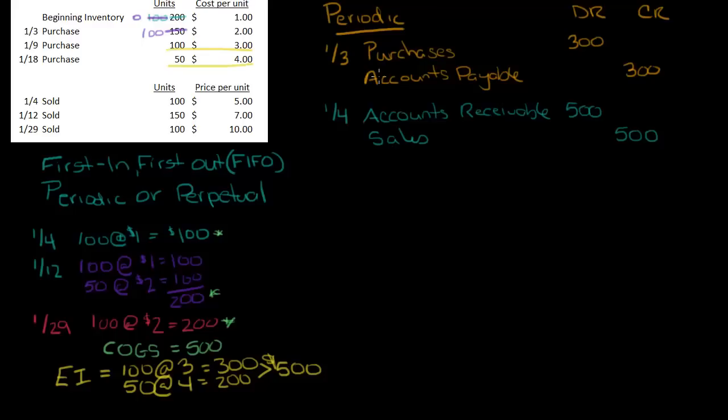Now with periodic, we do not have to adjust for inventory. Under periodic, we are not recording inventory. We're not recording costs of goods sold, because we're not going to adjust that until the end of the month.